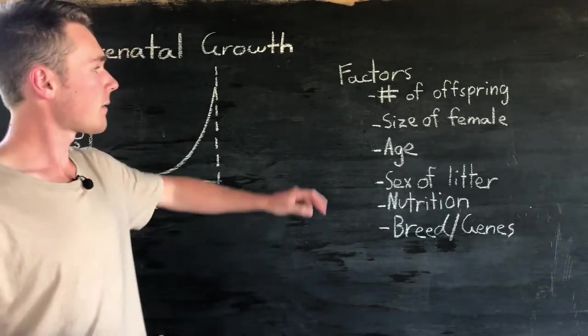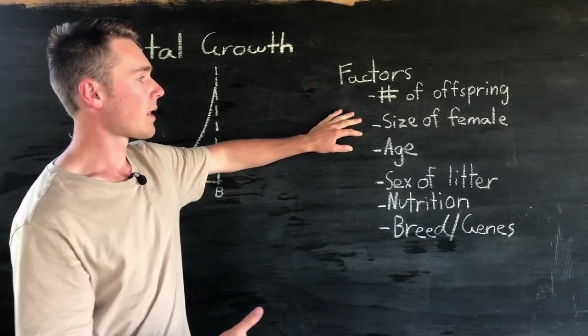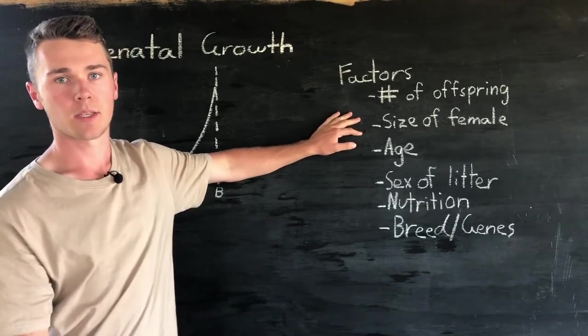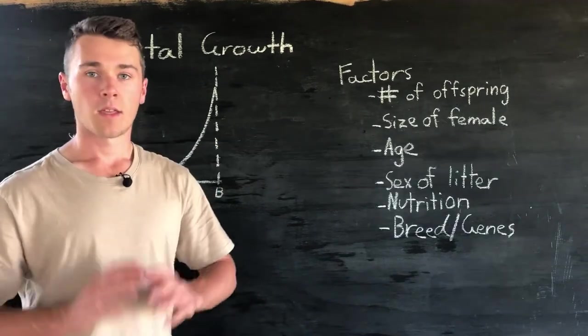Next we have the size of the female or mother, so a bigger mother is going to result in a bigger offspring. Now this mostly plays into the role of genetics. Next we have age.